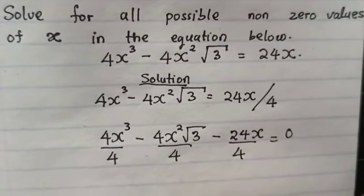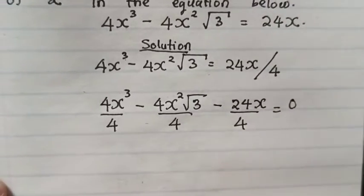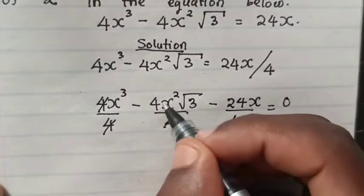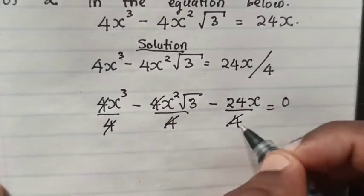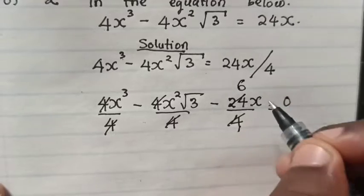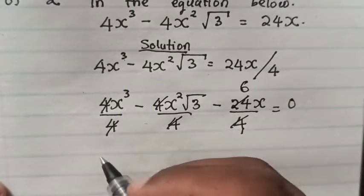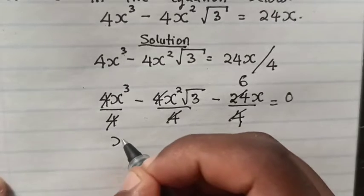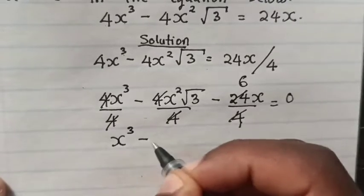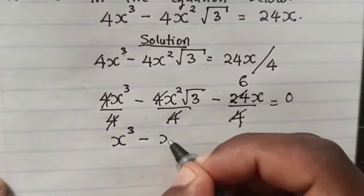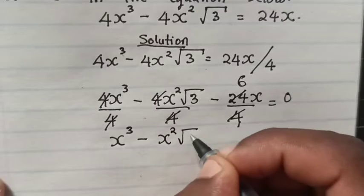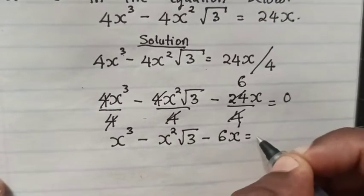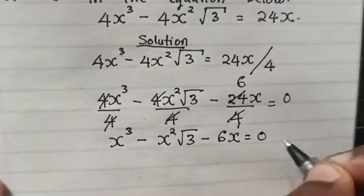Then from here we simplify. So our equation will be x³ minus x√3 minus 6x is equal to 0.